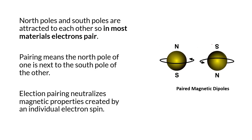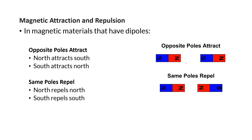In most materials, electrons pair. That's why most materials around you - you can take a magnet to them and nothing's really going to happen. When you have a lot of pairing electrons with spins pairing together, you're just going to have them neutralized. They're not going to attract some other object. The north and the south are going to complement each other.